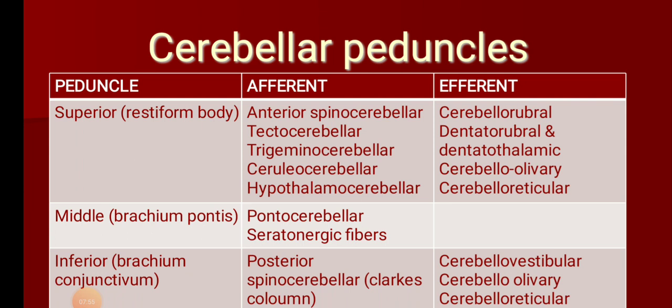Very close to the tectum is the trigeminal nucleus, from which fibers go towards the cerebellum — termed trigeminocerebellar. Then you get ceruleocerebellar fibers from the locus coeruleus to the cerebellum. And from the hypothalamus to the cerebellum — hypothalamocerebellar. So the five afferent fibers of the superior cerebellar peduncle are: anterior spinocerebellar, tectocerebellar, trigeminocerebellar, ceruleocerebellar, and hypothalamocerebellar.